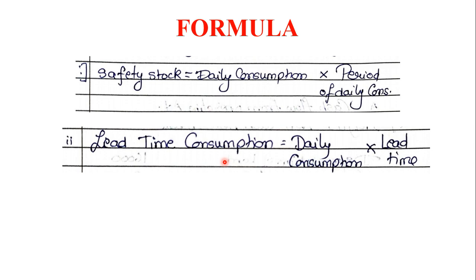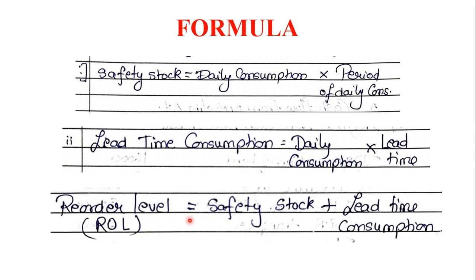Second, we need to find Lead Time Consumption. The formula is: Lead Time Consumption = Daily Consumption × Lead Time. The Daily Consumption used in Safety Stock and Lead Time Consumption remains the same. The Lead Time period is also given in the question. So from your question, you get Daily Consumption units, the period of daily consumption, and the Lead Time. Once you apply these, we get Safety Stock and Lead Time Consumption. Then our final answer — Reorder Level (ROL) = Safety Stock + Lead Time Consumption.